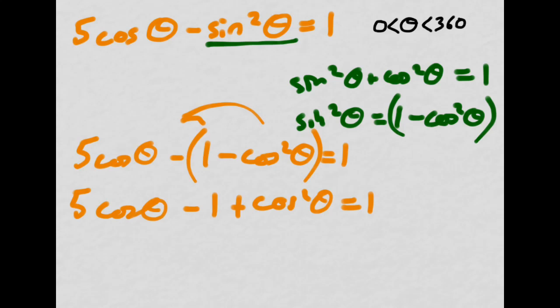I now have a quadratic equation and it only features the ratio cosine. So I'm going to tidy this up into a form. I've gone wrong.